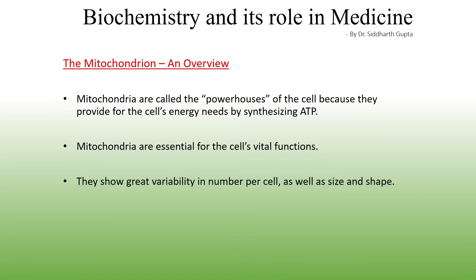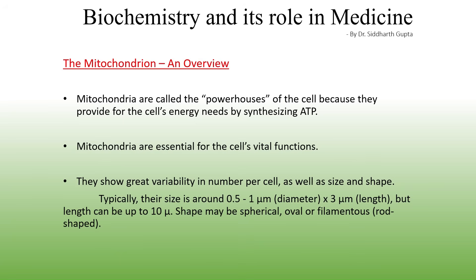Mitochondria show great variability in number per cell, size, and shape. On average, mitochondria are around 0.5 to 1 micrometer in cross-sectional diameter and around 3 micrometers in length, but their length can extend up to 10 micrometers, and their shape may be spherical, ovoid, filamentous, or rod-shaped.